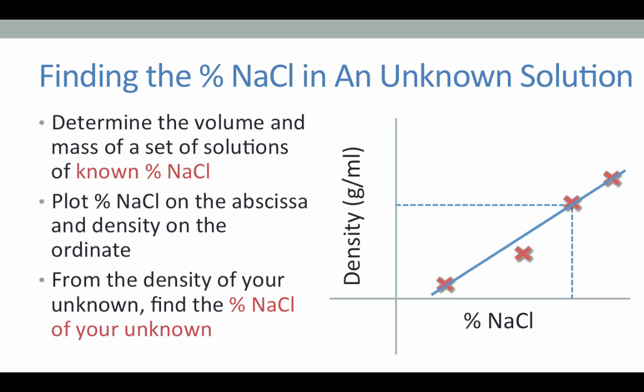So for today's experiment, you will determine the volume and mass of a set of sodium chloride solutions and use those volume and mass measurements to determine the density. You can then plot the density and the percent sodium chloride onto a graph with percent sodium chloride on the abscissa and density on the ordinate. From the density of your unknown, find the percent sodium chloride using your graph and standard curve. You would take the known density, travel along the graph until it hits the trend line, then travel downwards to the x-axis or abscissa to determine the percent sodium chloride.